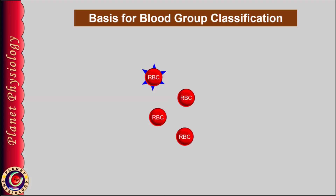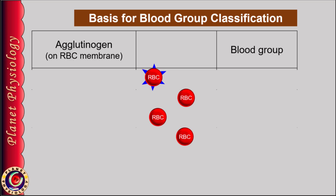Karl Landsteiner first discovered the ABO blood group system and later the Rh system. Based on his observations, he concluded that there are specific blood group antigens on the surface of RBCs. Blood group antigens are called agglutinogens. He classified the blood groups based on the presence or absence of agglutinogens.